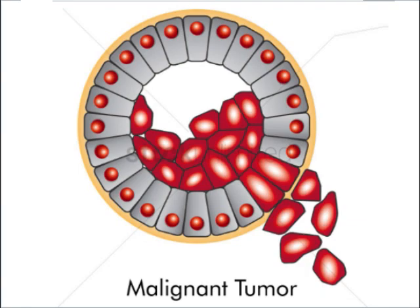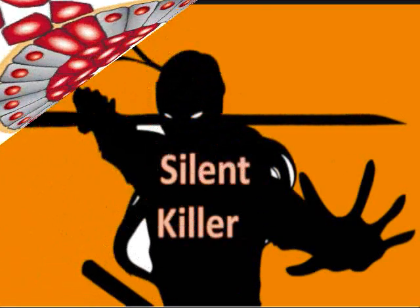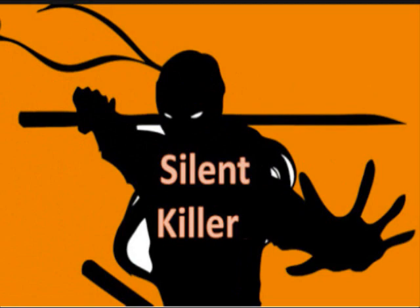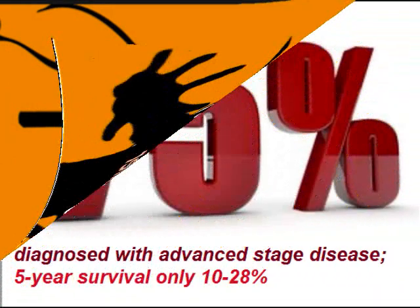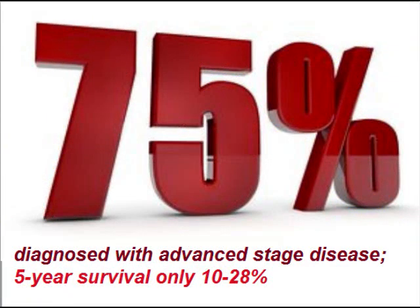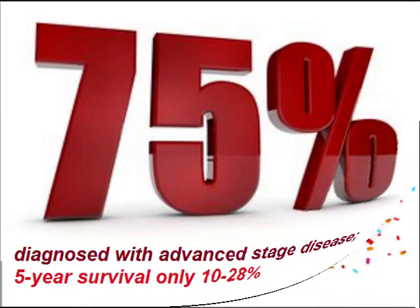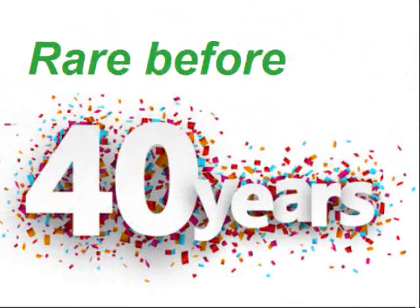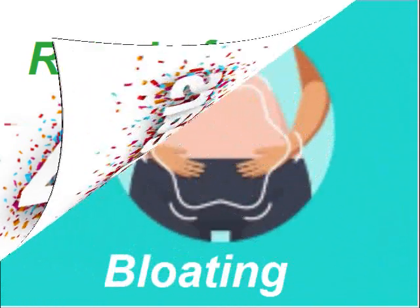As you know, the malignant tumors of the ovary are silent killers. Why are they silent killers? 75% are diagnosed with advanced stage disease, and the 5-year survival is only 10–28%. They are rare before 40 years of age.